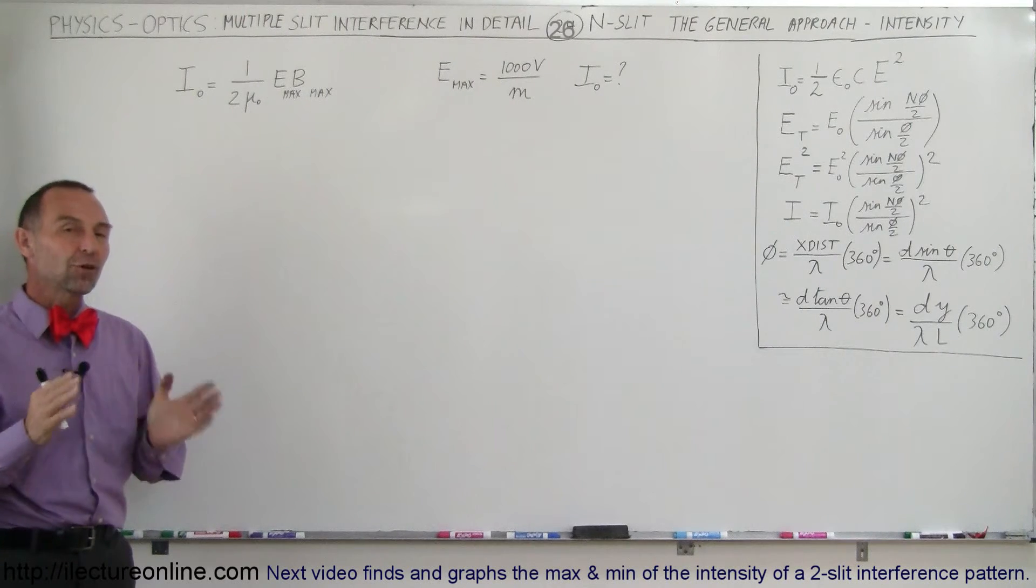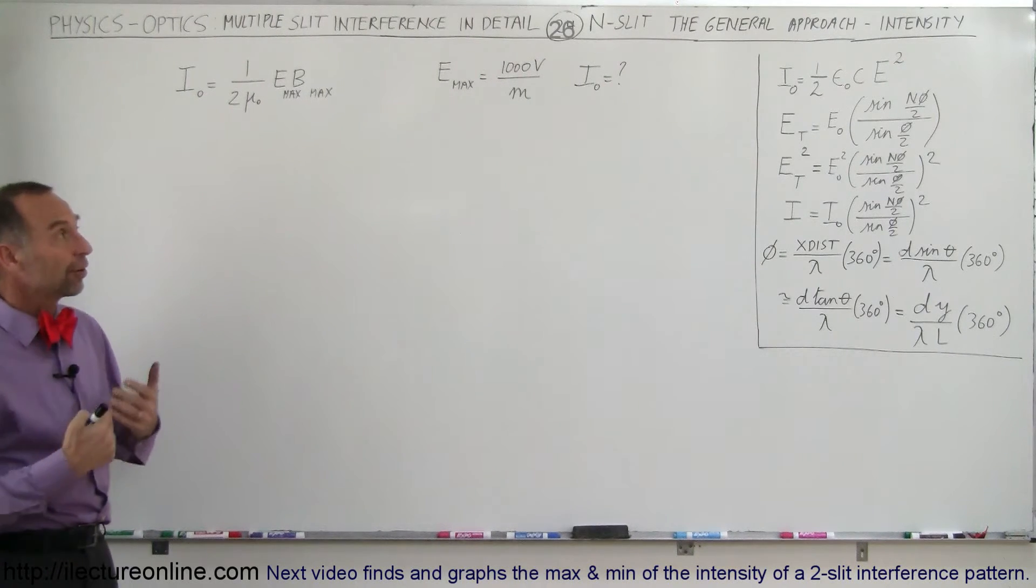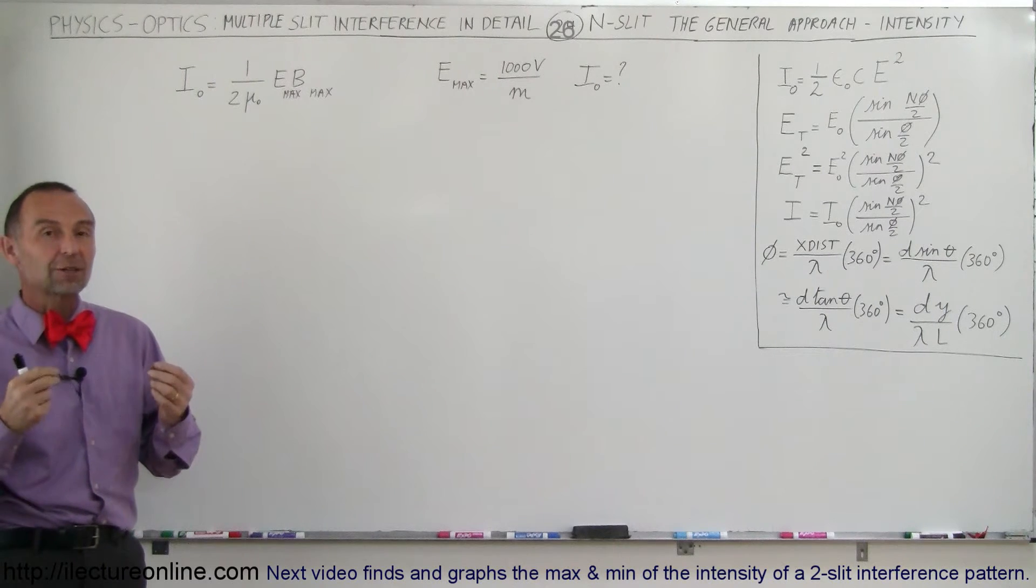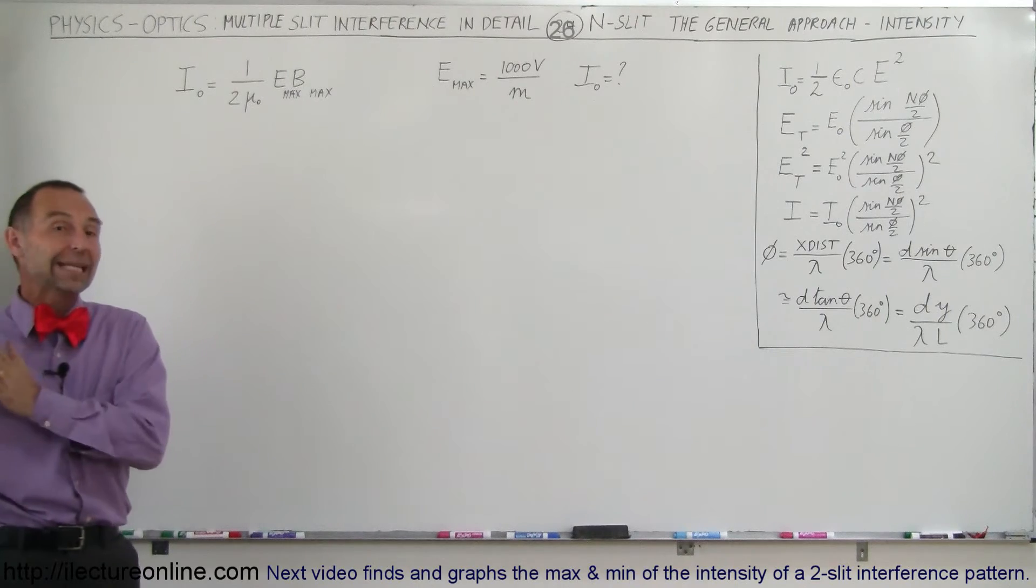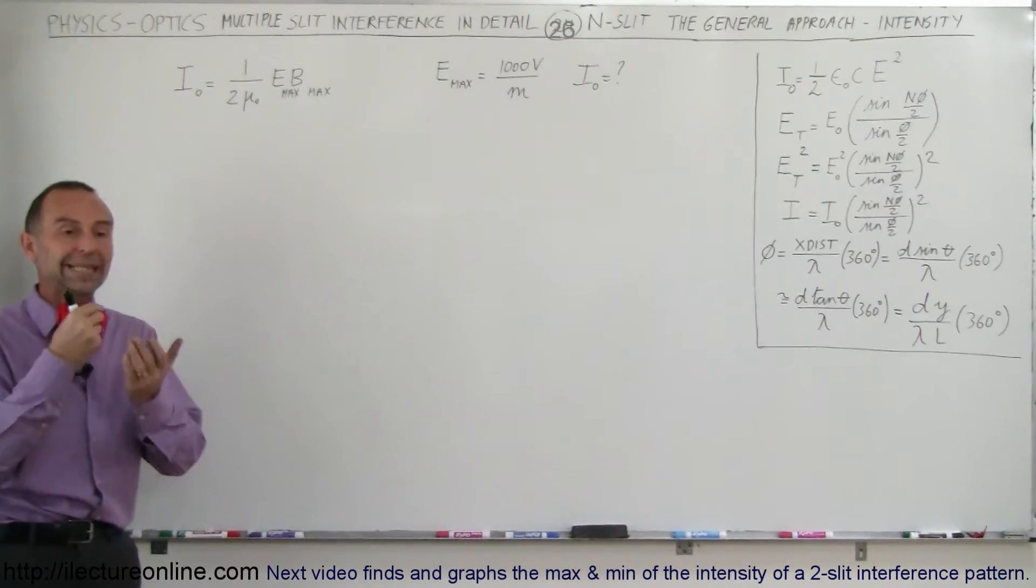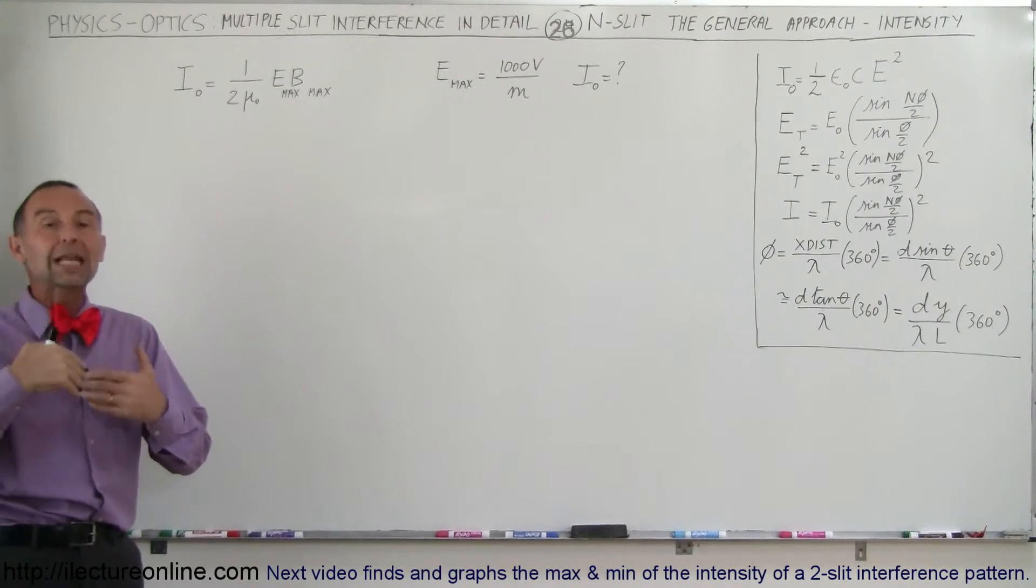Welcome to ElectronLine. So far with N slits and our interference patterns, we've always talked about the intensity in terms of I sub nought. I sub nought is the intensity of the radiation entering the slit, so would be the intensity of the radiation entering any one slit.